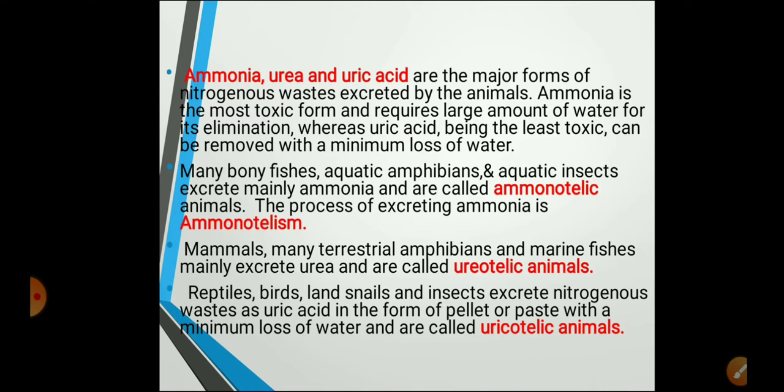You may get exam questions such as: mention the three different groups of animals based on the major excretory product; what are ammonotelic organisms — give examples; what are ureotelic organisms — give examples; what are uricotelic organisms — give examples. In the first case the product is ammonia, in the second it is urea, and in the third it is uric acid.